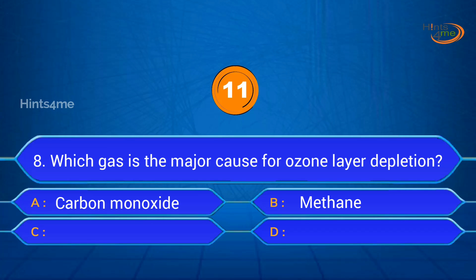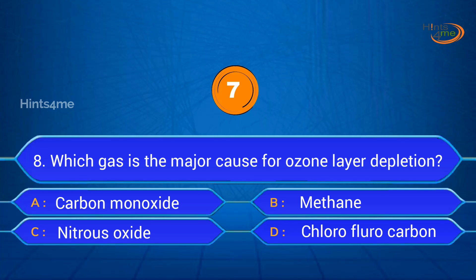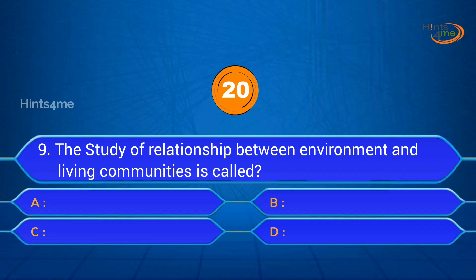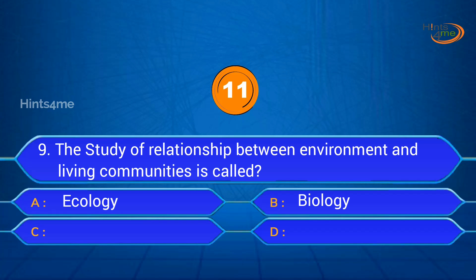Question 8: Which gas is the major cause for ozone layer depletion? A. Carbon monoxide, B. Methane, C. Nitrous oxide, D. Chlorofluorocarbon. Answer: D. Chlorofluorocarbon.